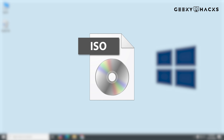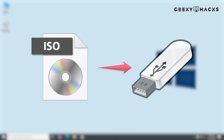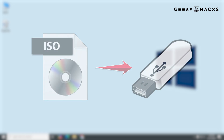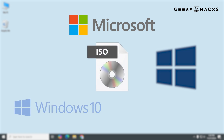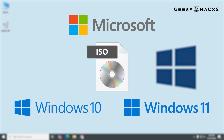You can burn it to a DVD, but in most cases today, we use it to create a bootable USB drive. This is faster, more reliable, and works with computers that don't have a DVD drive. Microsoft provides official ISO files for Windows 10 and 11, ensuring they're safe and unmodified.